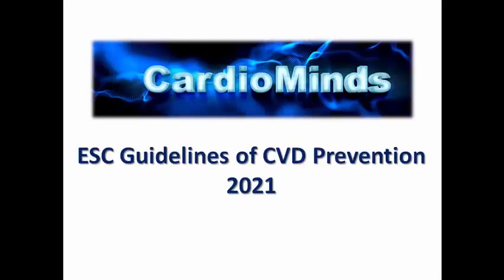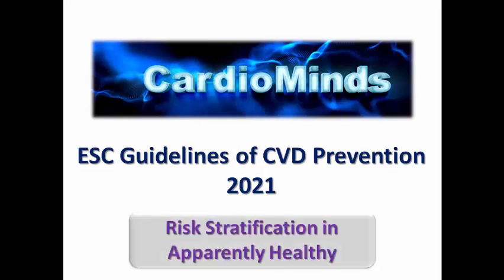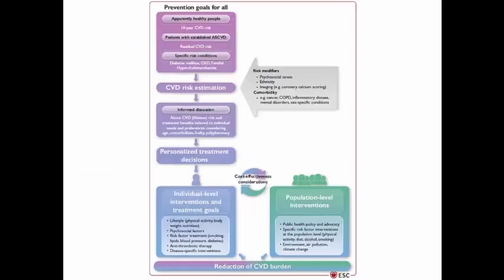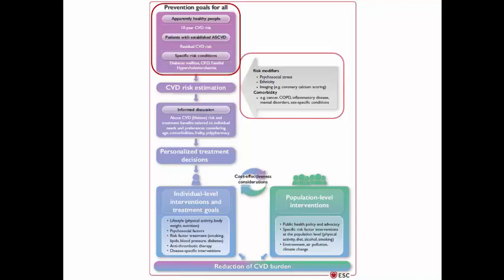Welcome to CardioMind's channel. We are continuing the topic of guidelines on cardiovascular disease prevention, and today we are speaking about risk stratification in the apparently healthy population. We recall the diagram from the preamble: prevention goals apply to all types of population — apparently healthy individuals, those with established cardiovascular disease, or those with a specific risk condition. We have previously spoken about risk modifiers and comorbidities and how they may influence cardiovascular risk.